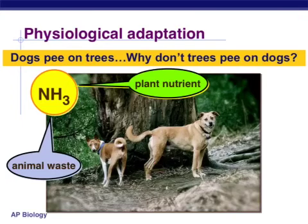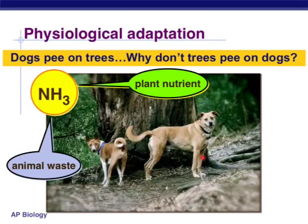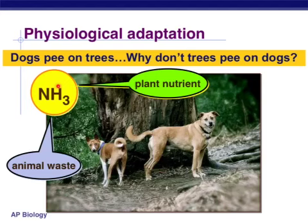Plants obviously do need some things other than just sunlight and water. They also need some nutrients, some minerals, and that's going to come more than likely from the soil in which they grow. I thought this was a funny picture because you always see dogs peeing on trees and plants, but you don't ever see trees peeing on dogs. To the plant, this is how it gets some of those vital nutrients through animal waste, because it has some of those molecules and elements that plants so desperately need.